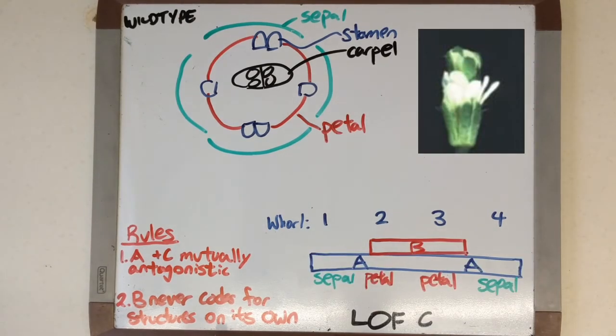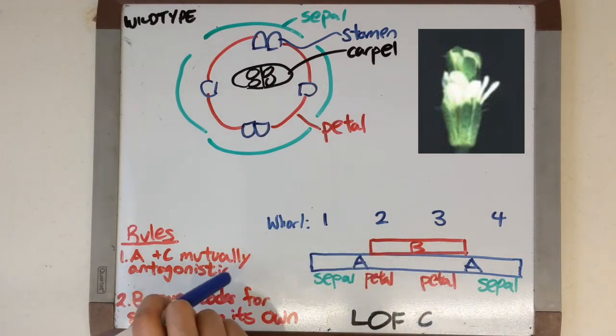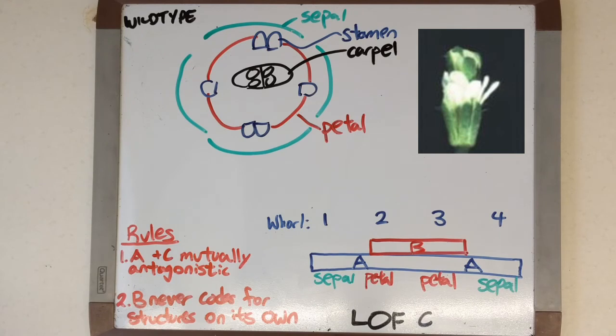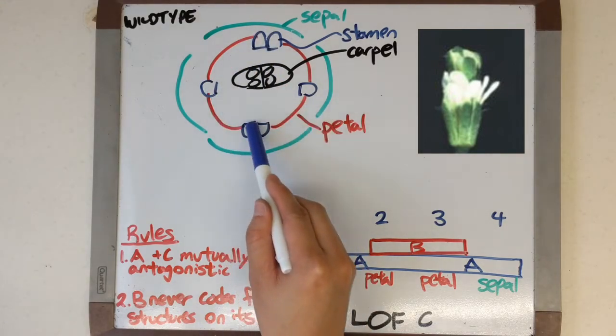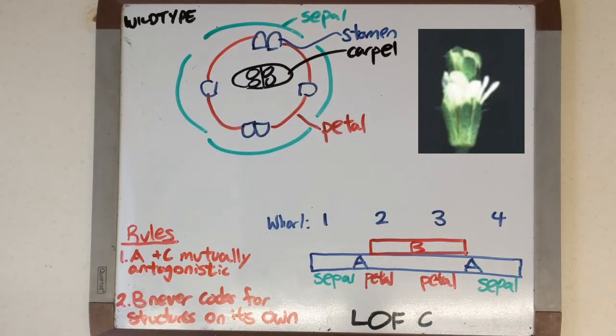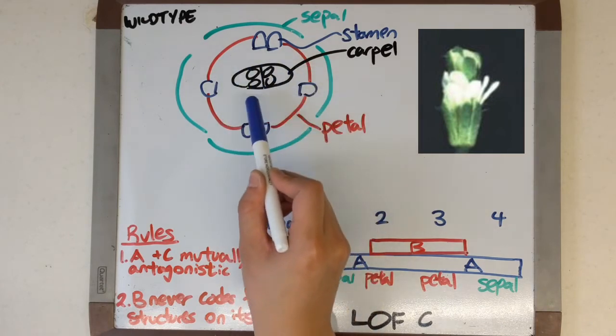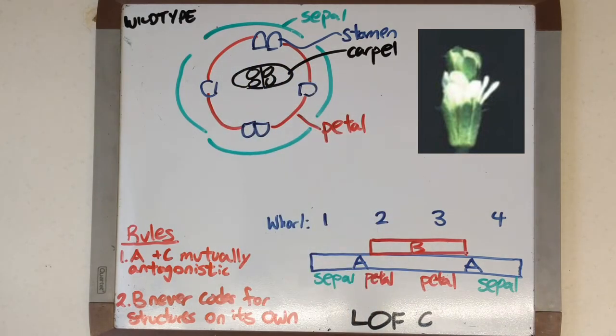Next we'll talk about a loss of function of gene class C. Similar to the last one, if C isn't present, A is not repressed, and this means that expression of A will expand to cover all four whorls. Now whorl 3, which is normally the stamen, and whorl 4, which is normally the carpal, will change to petal and sepal respectively because it's now gene class A and B together, and gene class A alone.